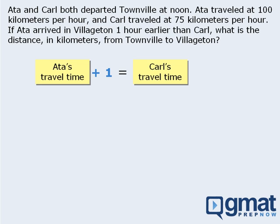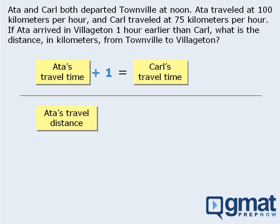What sort of equation can we write based on distances? Since Ada and Carl are both traveling from Townville to Villagetan, we can say that the distance Ada traveled and the distance Carl traveled must be equal. This is the word equation we can write based on distances.